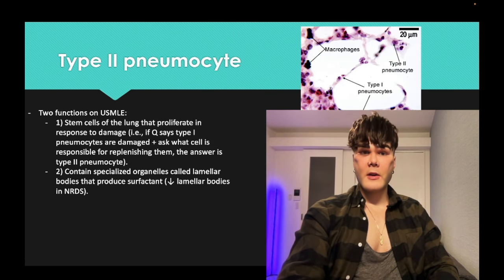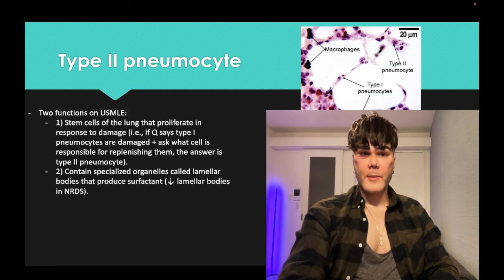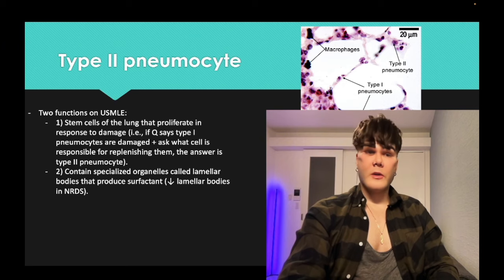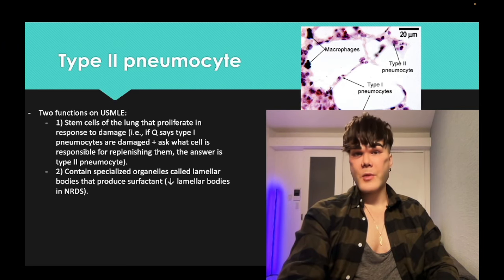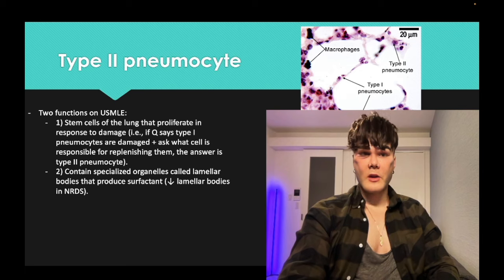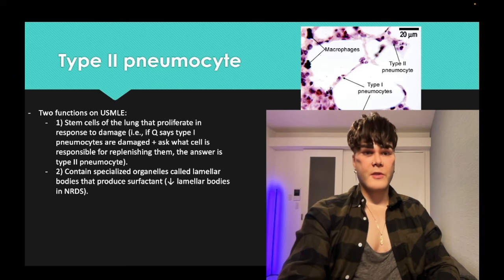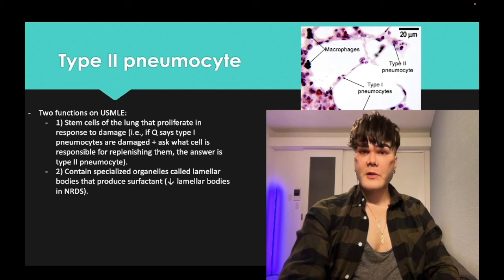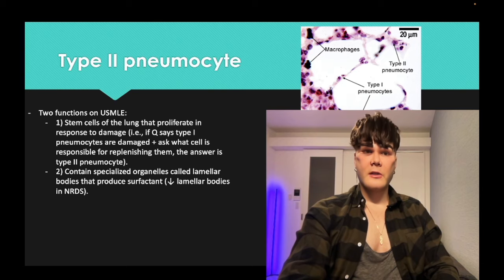You need to know the two functions of type 2 pneumocytes. First, they are the stem cell of the lungs — if you get pulmonary damage, they replicate to produce other type 1 pneumocytes. Second, type 2 pneumocytes produce surfactant. In neonatal respiratory distress syndrome, a preterm kid with dyspnea, the answer is decreased lamellar bodies — the specialized organelles in type 2 pneumocytes that produce surfactant.